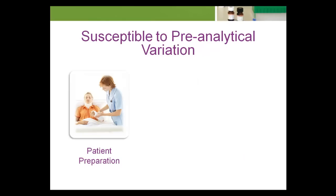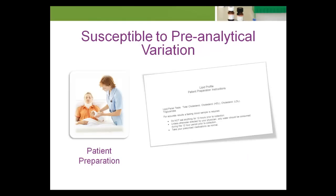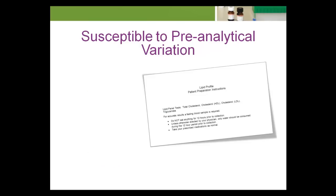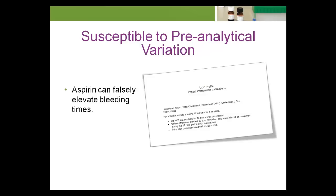When preparing a patient for specimen collection, the instructions given to the patient need to be clear and consistent. The patient should be able to demonstrate an understanding of the instructions. For example, numerous tests require a patient to fast. The patient will need to know what fasting is and for how long they should fast before specimen collection. Aspirin can falsely elevate bleeding times. A patient will need to know she must stop taking aspirin for a period of days before a bleeding time test is performed.